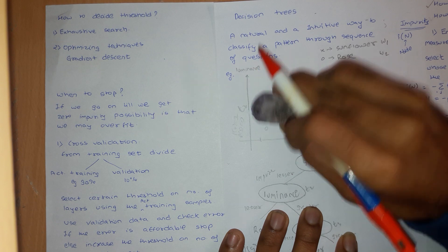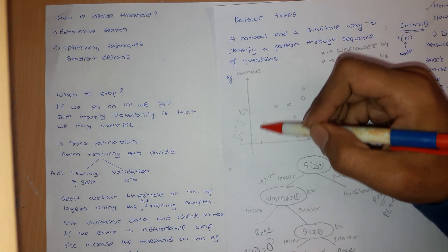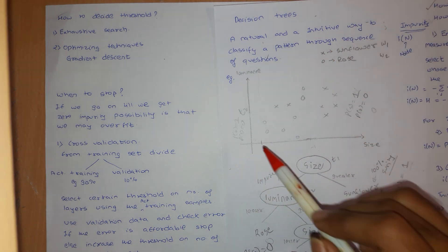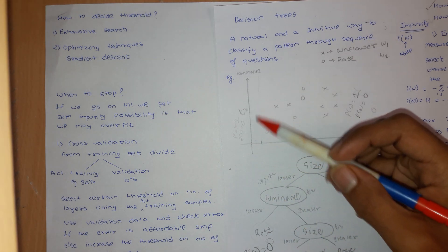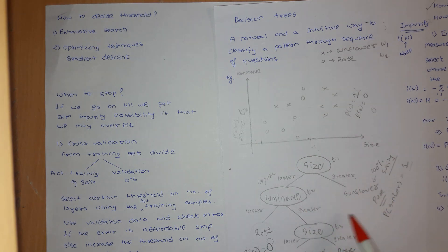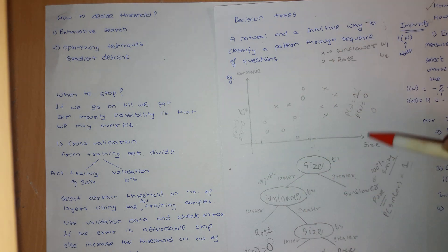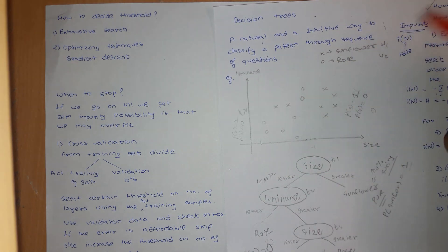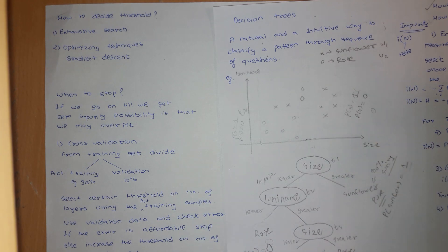Next, we change the threshold. If for the side where values are lesser than the threshold there is nothing, there is no measure of impurity. But on the other side there is very large impurity — so much uncertainty, everything is uncertain. The impurity at this particular step will be high, so this is a bad decision.